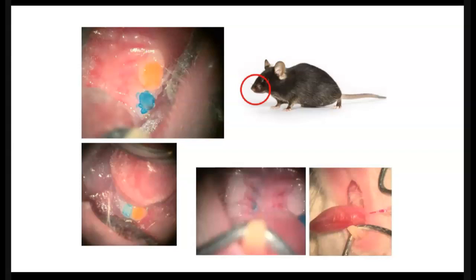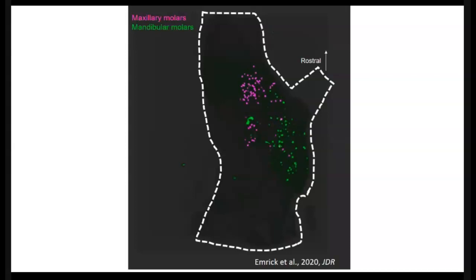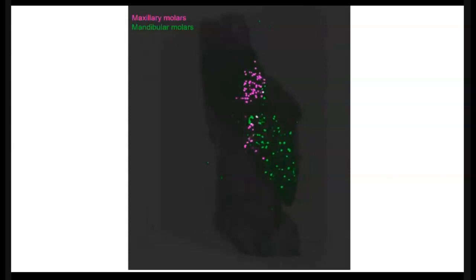So after application of the dye, what can we see in the ganglion? We see robust labeling of cell bodies of sensory neurons innervating the teeth. So to orient you, we're looking at the trigeminal ganglion from the top. Coincidentally, it seems to resemble the state of Michigan. The ganglion has been embedded in a gel, and then it's cleared, and that allows us to image it in whole-mount format using light-sheet microscopy. So in this particular image, in this reconstruction, we have the maxillary and mandibular molars labeled with separate dyes. So you can appreciate that there's a substantial number of neurons that innervate the teeth.